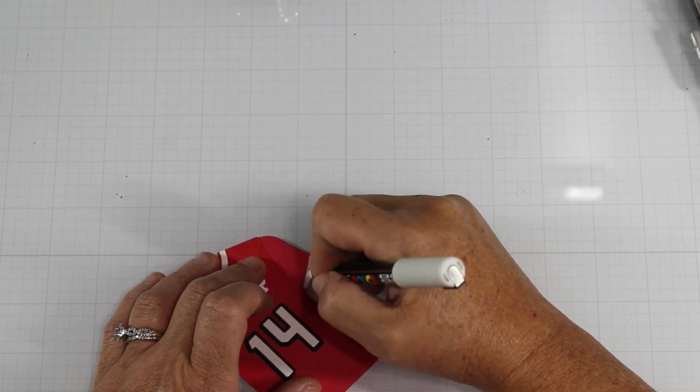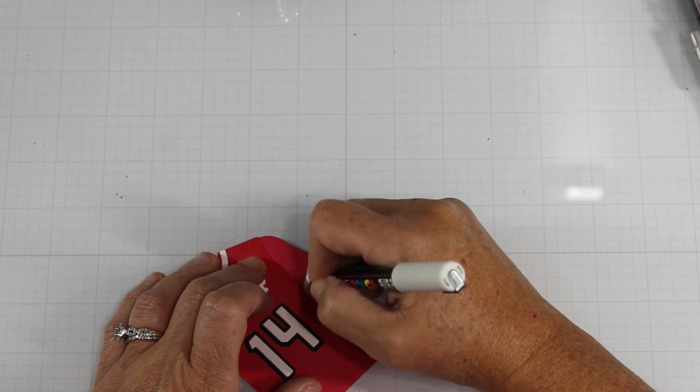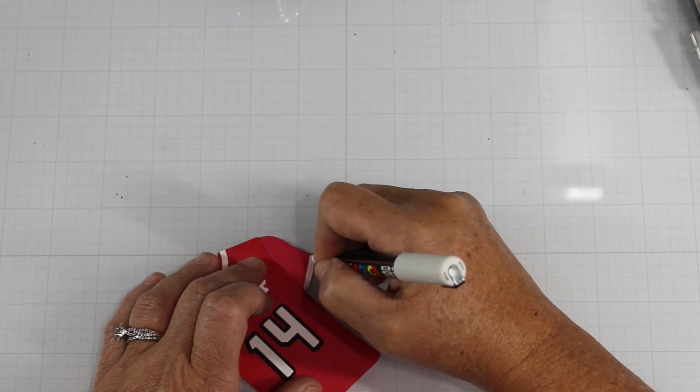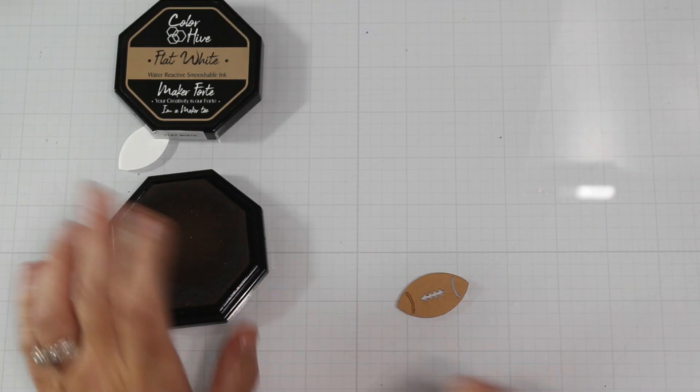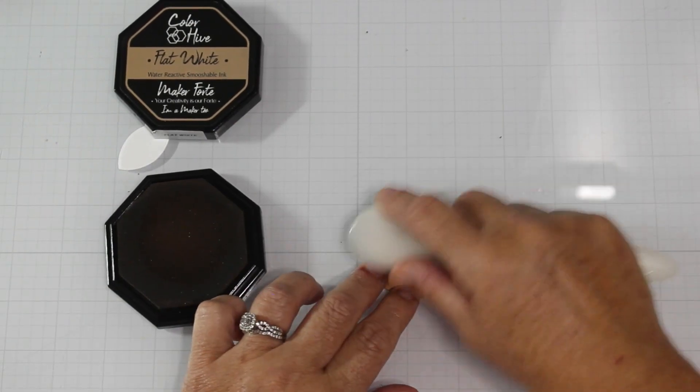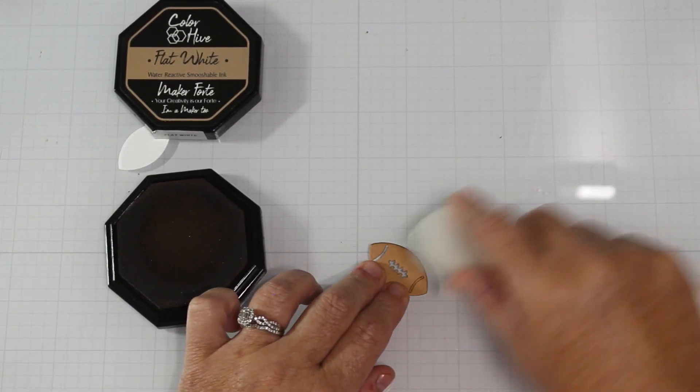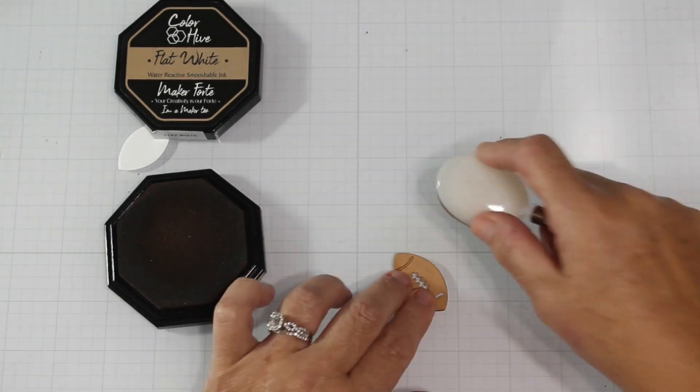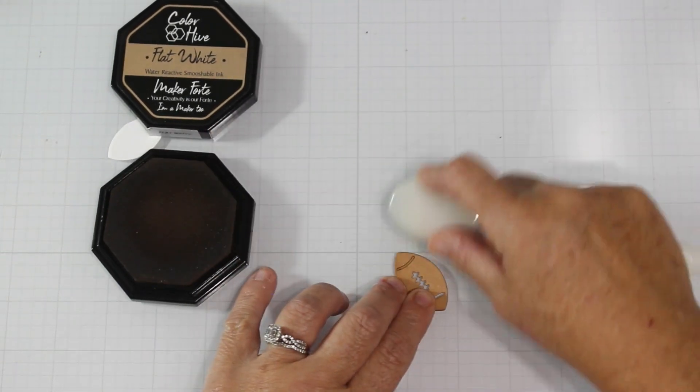Now, like I said, Justine did leave some stripes that you could cut, but I just used my Uniposka pen to draw the stripes in. Here I'm using some brown ink to just add some color differentiation in the football.